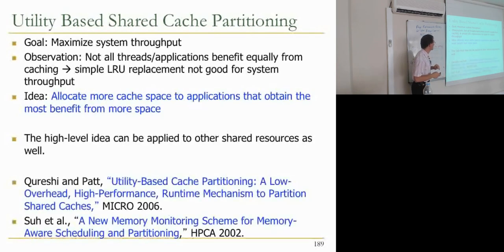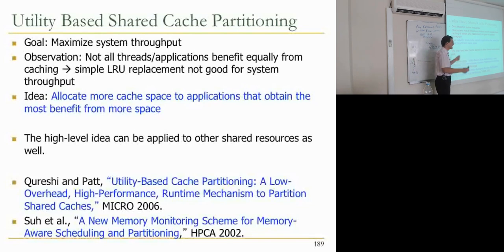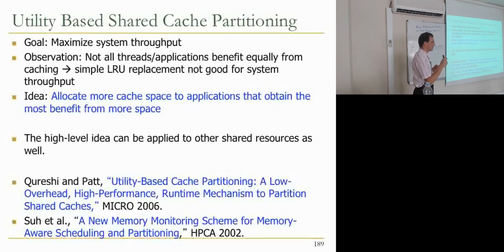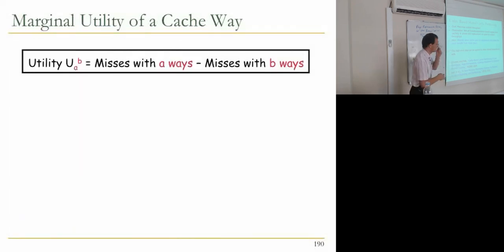This high-level idea can be applied to other shared resources as well. It was proposed early on for main memory — Harold Stone has a paper from the 1990s describing a mechanism that partitions main memory across different applications based on the utility of allocating another cache block to each application. You pick the application that benefits most from the additional block. That paper has a very difficult implementation, so a more amenable implementation was developed, which is why it's been considered more significantly.